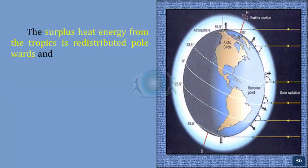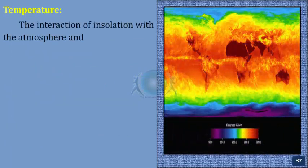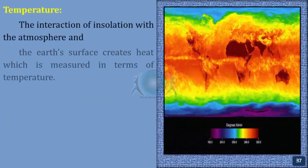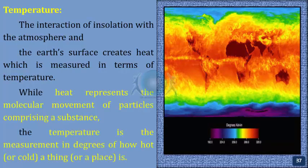Temperature. The interaction of insolation with the atmosphere and the Earth's surface creates heat, which is measured in terms of temperature. While heat represents the molecular movement of particles comprising a substance, temperature is the measurement in degrees of how hot or cold a thing or a place is.